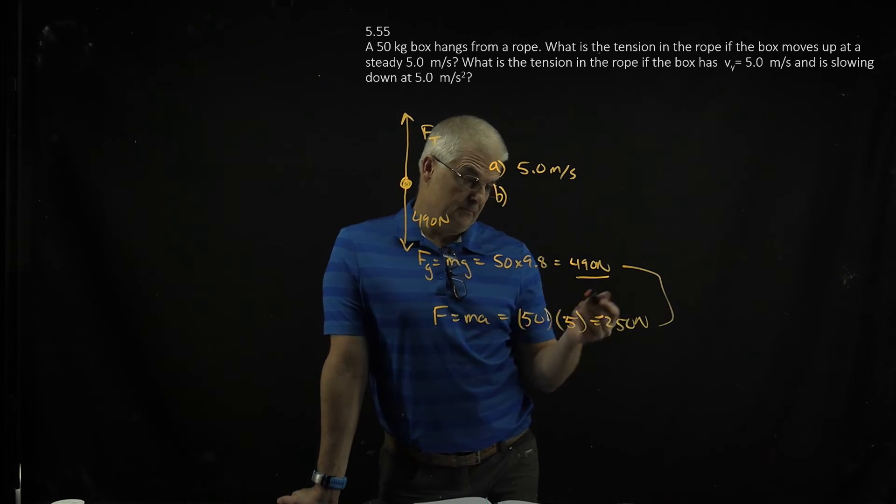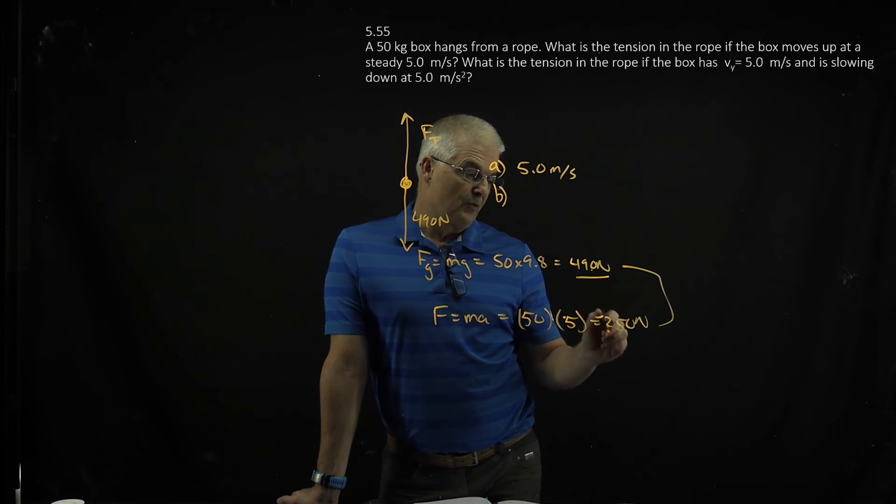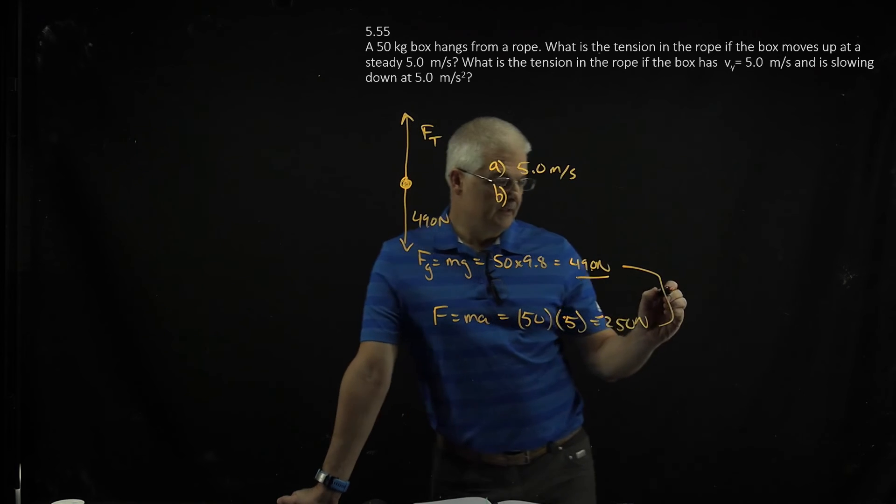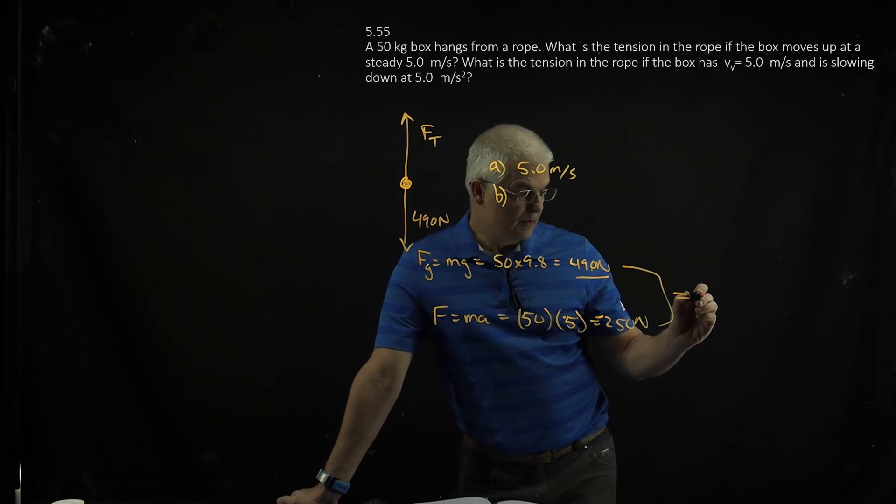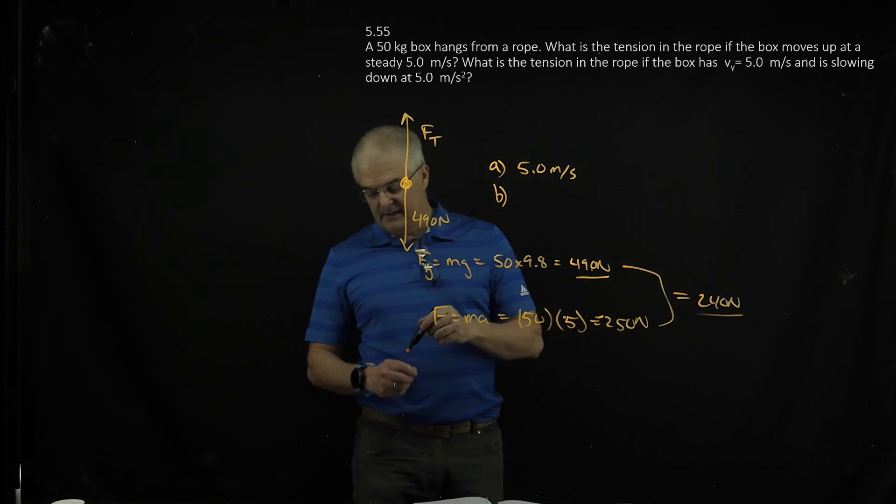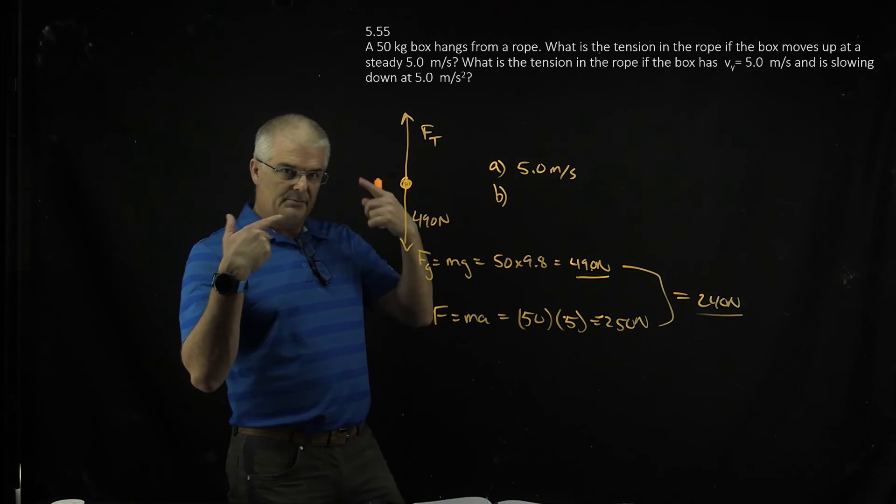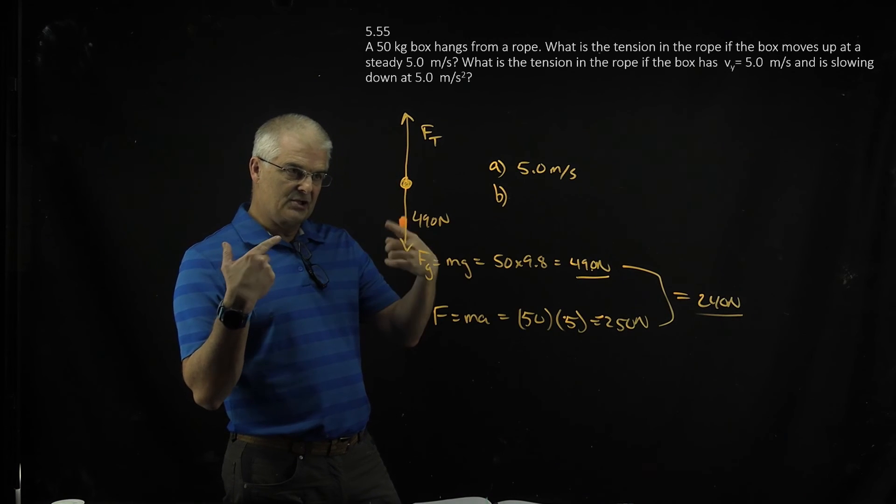And so in this case, what you'll do is you will actually subtract. You're going to add this plus the negative. So it's 490 minus or plus negative 250, and you get 240 newtons. So you have to think this through. Sometimes getting the signs right will help. But I think what helps the best is if you think through it logically.